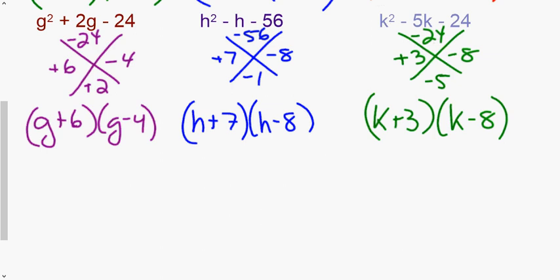For the g problem: multiply to be negative 24, numbers two apart — that's six and four. Six minus four is two, and since we need positive two on the bottom, the factors are (g + 6)(g − 4).